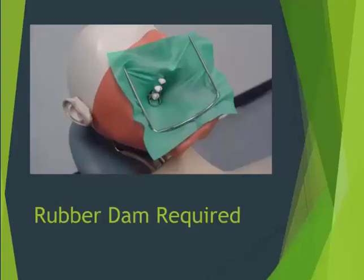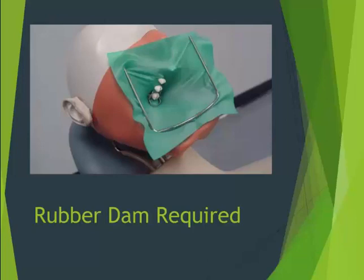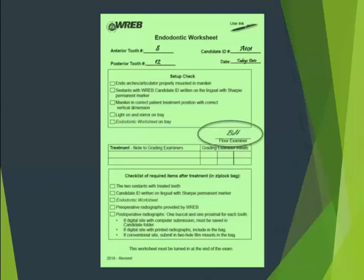A rubber dam must be placed before any treatment and remain in place during the treatment. It is in place to simulate a clinical situation. The rubber dam must cover all maxillary and mandibular teeth not being treated. You may choose to remove the rubber dam when taking radiographs, but it is not mandatory. Single or multi-tooth isolation is acceptable. Placing the rubber dam clamp on an adjacent tooth is recommended. If all is correct, the floor examiner will sign the worksheet. This does not mean you can start — you may start only after the floor examiner announces that the examination time has started. Remember, the start of the endodontics exam is an announcement.